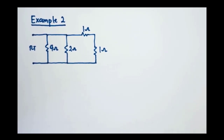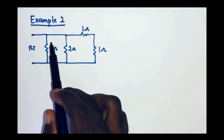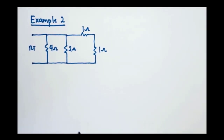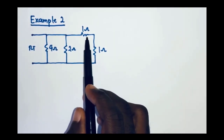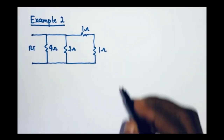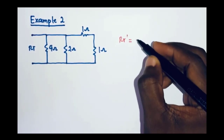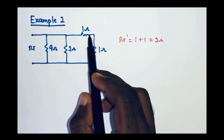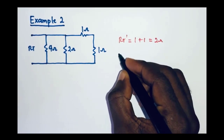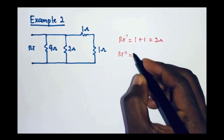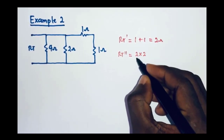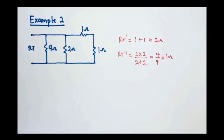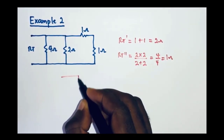In our second example, we have four resistors: a 4 ohm resistor, a 2 ohm resistor, and two 1 ohm resistors. The two 1 ohm resistors are connected in series, so their equivalent Rt prime equals 1 plus 1, giving 2 ohms. This combination of 2 ohms is then in parallel with the 2 ohm resistor, so Rt prime prime equals 2 multiplied by 2 divided by 2 plus 2, which gives 4 divided by 4, equal to 1 ohm.